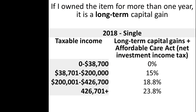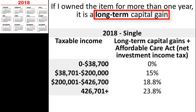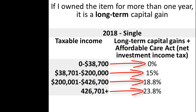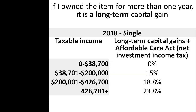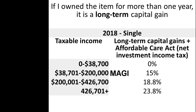If the taxpayer owns the investment for more than one year, any gain is taxed as a long-term capital gain. Long-term capital gains tax rates are lower than those for ordinary income or short-term capital gains. The capital gains tax rates are 0%, 15%, and 20%. However, the Affordable Care Act imposes an additional 3.8% tax on net investment income of taxpayers over certain income thresholds — for example, $200,000 of modified AGI for a single individual, $250,000 for a married couple filing jointly, not indexed for inflation.